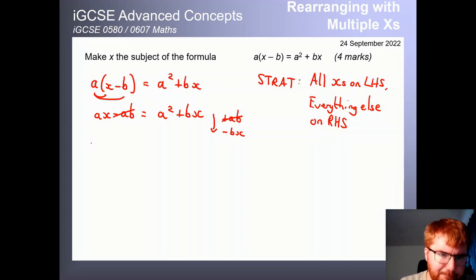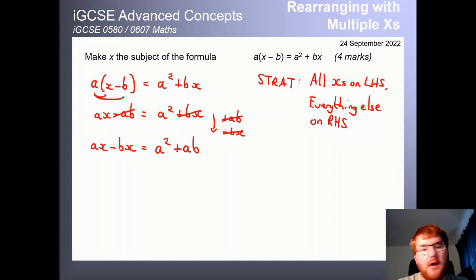If I do this, well, this cancels here, this cancels here. And we've got the minus bx. So we get ax minus bx. And then on the other side of the equation, well, this is cancelled with this. We've still got the ab. So we get a squared plus ab. If you want to do that in two steps rather than one, that's absolutely fine as well.